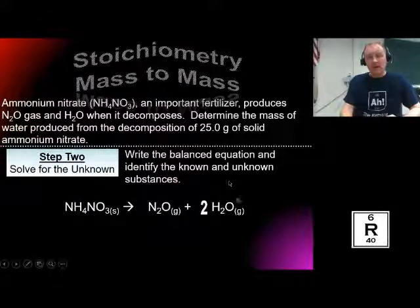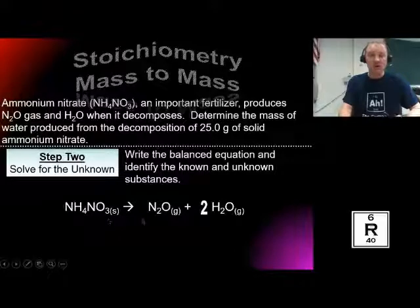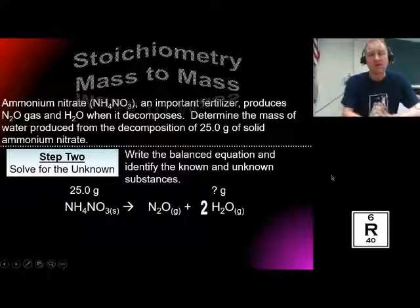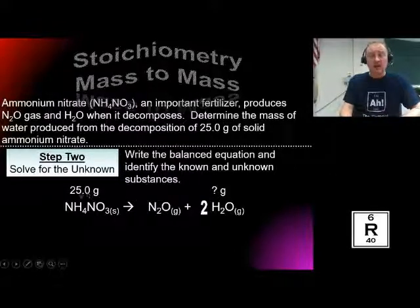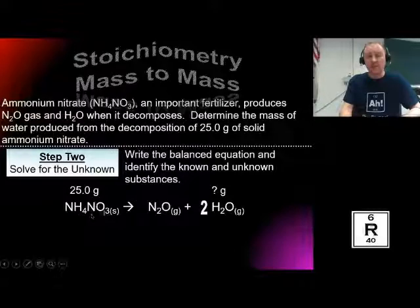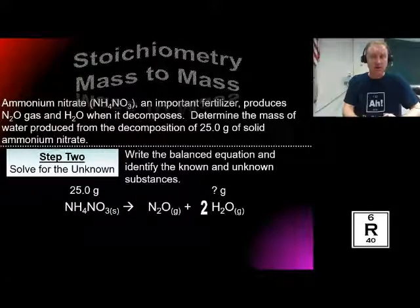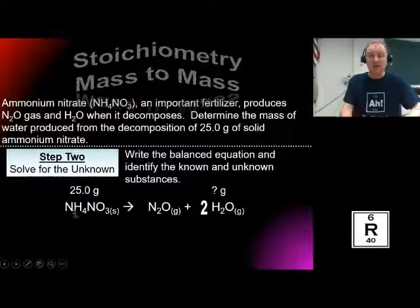What I highly recommend is when you do stoichiometry problems, get your balanced equation and write what you have and what you need to solve for on the equation. I have 25 grams of ammonium nitrate and I need to know how many grams of water. Now, the most common mistake people make is they'll say there's 25 grams of ammonium nitrate, and since for every one ammonium nitrate you get two waters, they'll mistakenly put 50 grams of water. That would be incorrect because this is not a mass-to-mass relationship — it's a mole-to-mole relationship. One mole of ammonium nitrate turns into two moles of water.